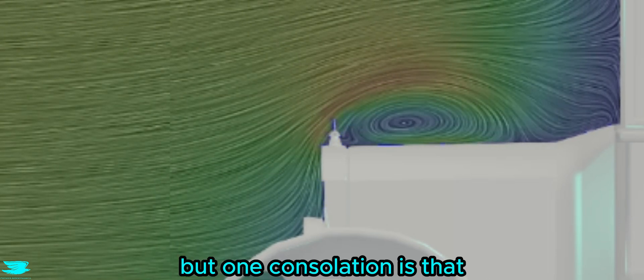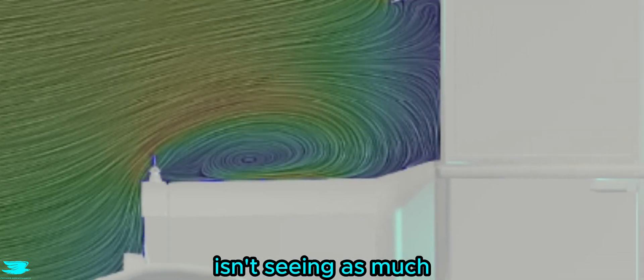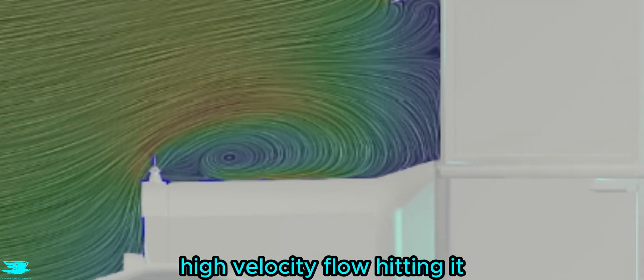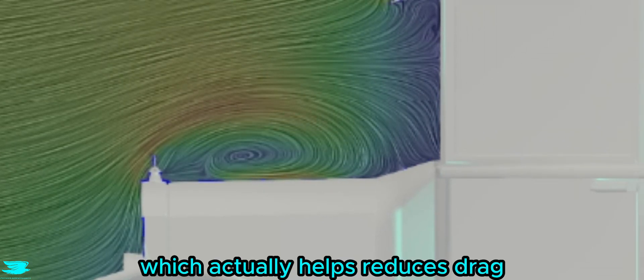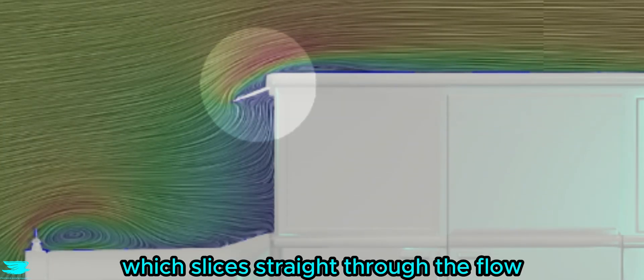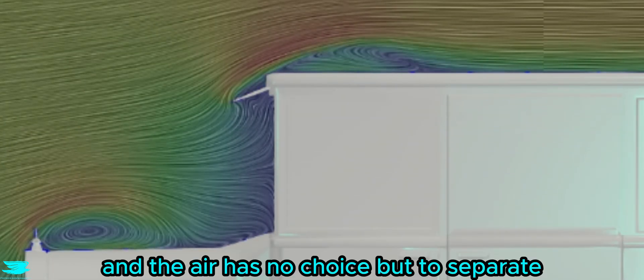But one consolation is that because there is a decent wake from the front, the very flat front windshield isn't seeing as much high-velocity flow hitting it, which actually helps reduce its drag. Then you have this little jaunty visor, which slices straight through the flow, and the air has no choice but to separate.